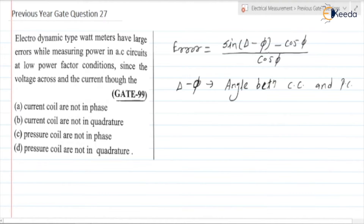So the error comes into the picture when they are not in quadrature — that is, when delta minus phi is not equal to 90 degrees. If delta equals phi, sine of (delta minus phi) becomes sine zero, which is zero, so error becomes minus cos phi divided by cos phi, giving minus one — meaning maximum error. If delta is 90 degrees, the error becomes zero. So the correct option is B: the voltage across and the current through the current coil are not in quadrature.